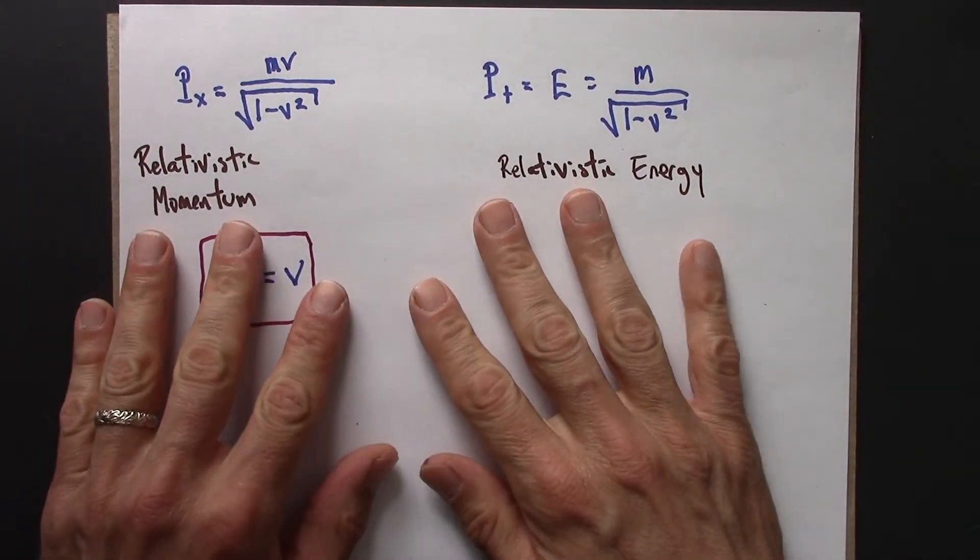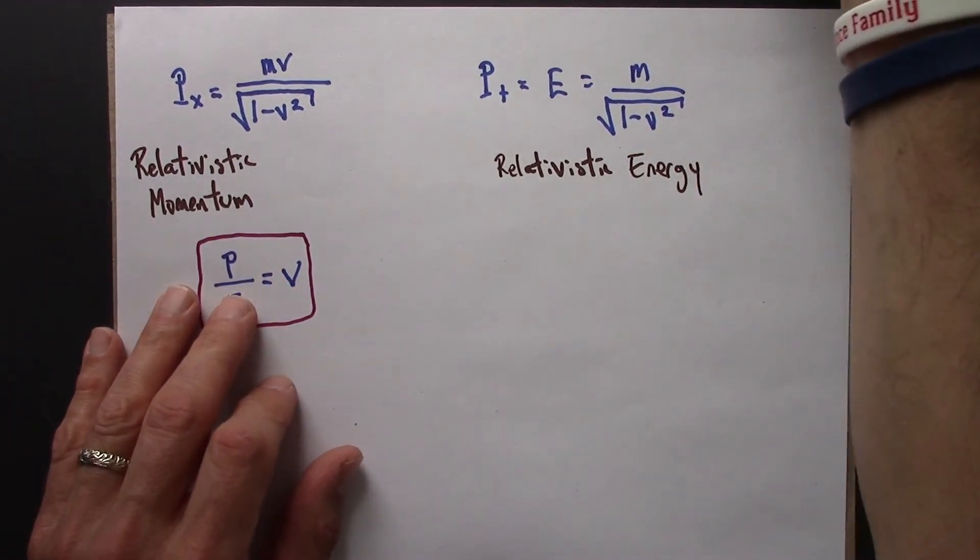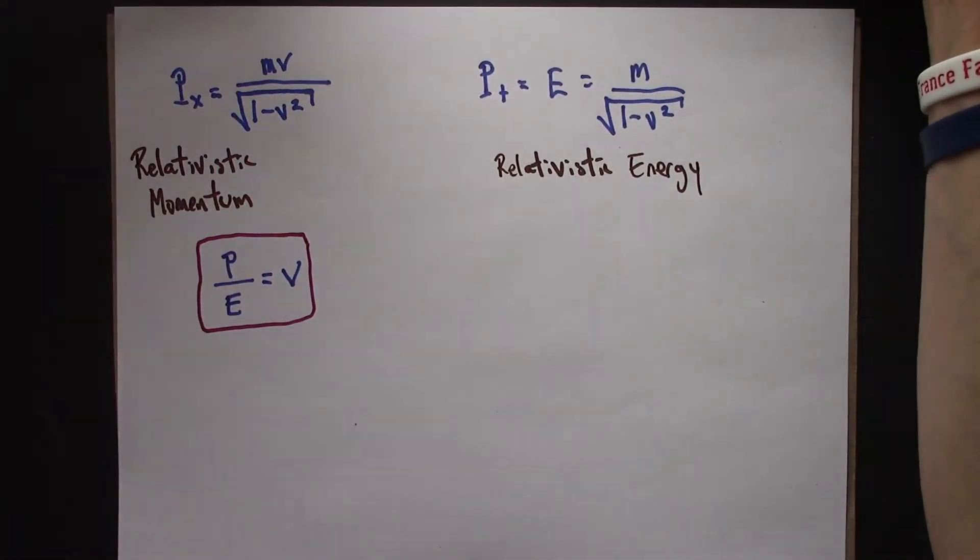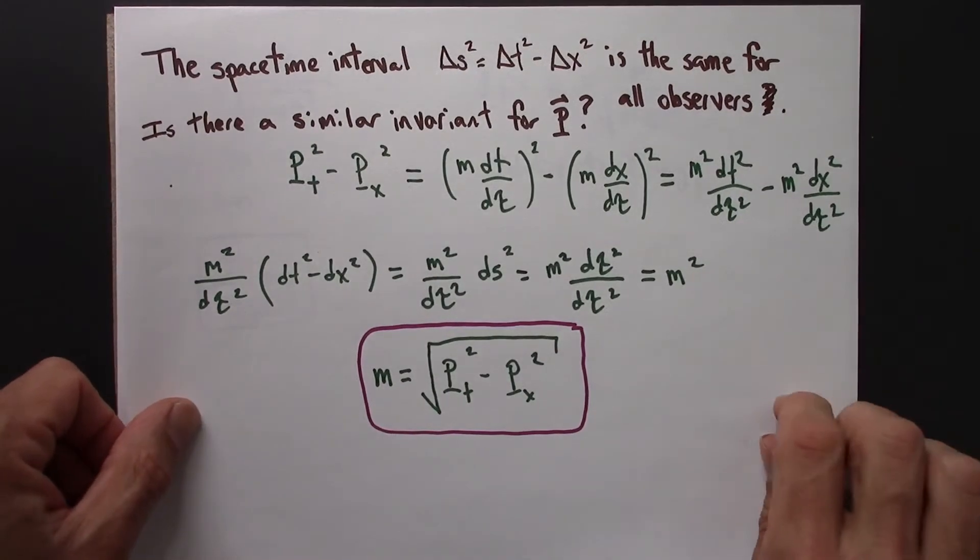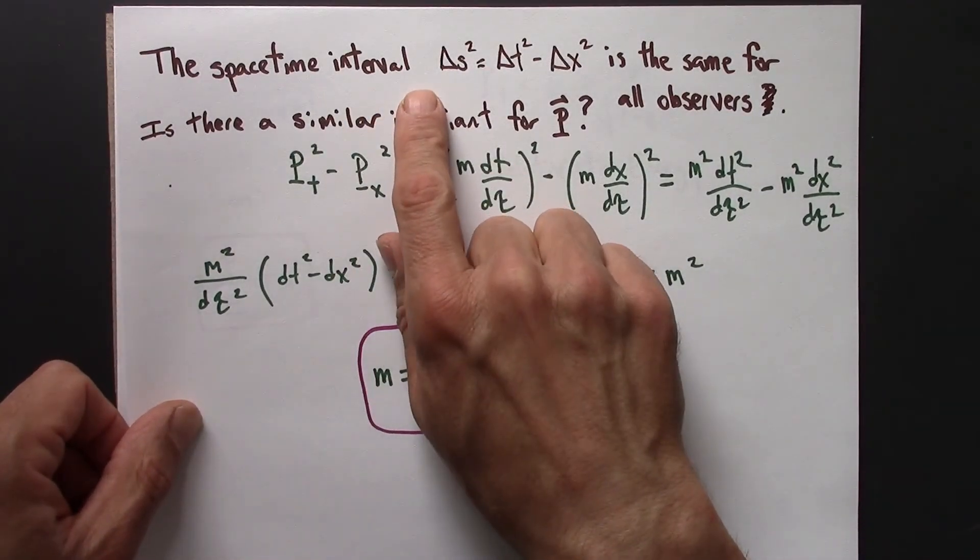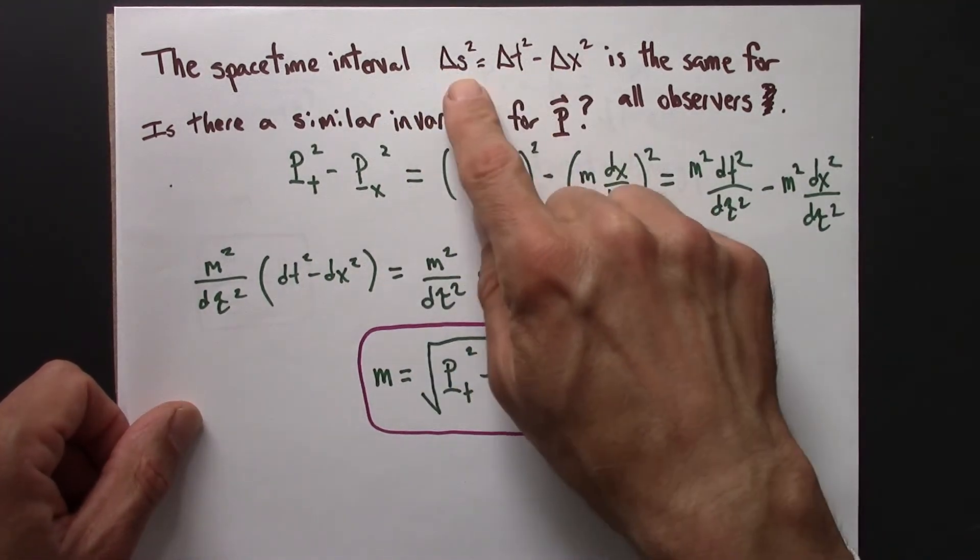Alright. So there's one more relationship that I want to explore, and to do so I want to take us back to this. So remember we said, alright, so I'm thinking about spacetime and four vectors there.